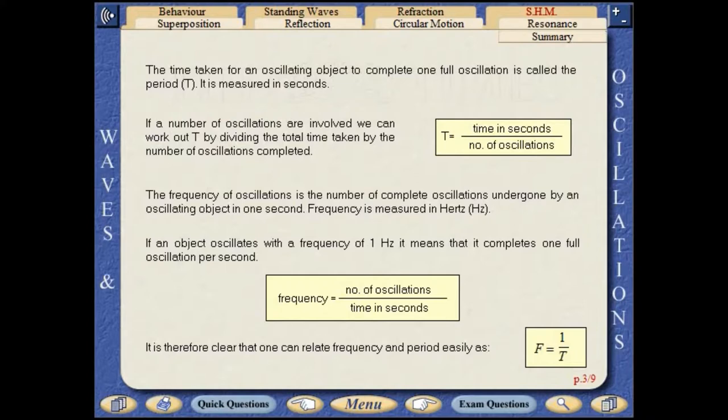If a number of oscillations are involved, we can work out t by dividing the total time taken by the number of oscillations completed. The frequency of oscillations is the number of complete oscillations undergone by an oscillating object in one second. Frequency is measured in hertz.